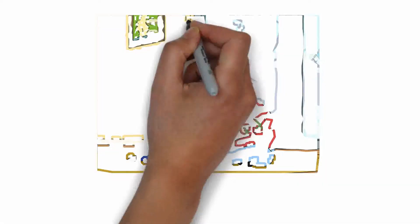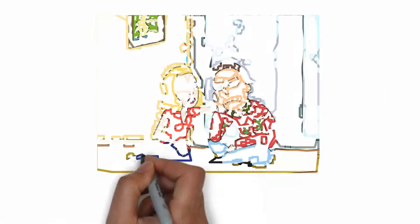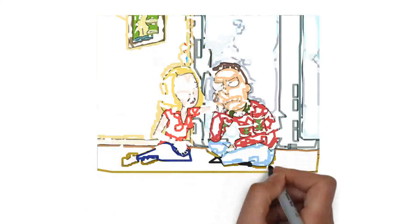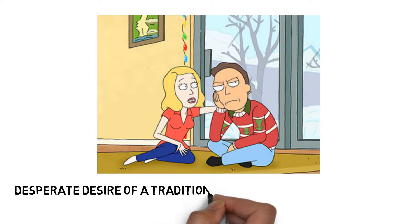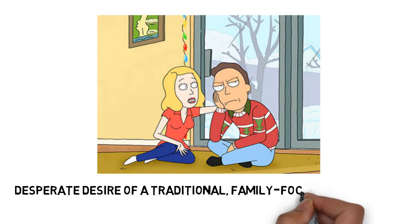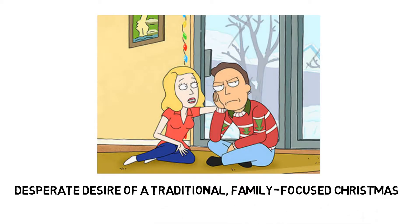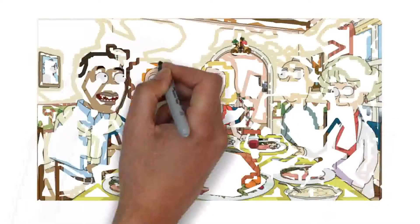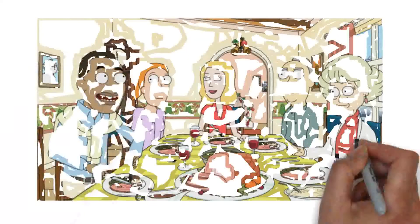Meanwhile, Jerry finds himself in desperate desire of a traditional, family-focused Christmas. To that end, he demands everyone give up their smartphones and other electronic devices. This is a great example of the way Rick and Morty seamlessly tells two completely different stories, bringing them together at the end in breathtaking fashion. As Morty tries to survive Anatomy Park, Jerry quickly comes to regret asking the rest of the family to give up their devices.